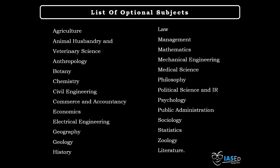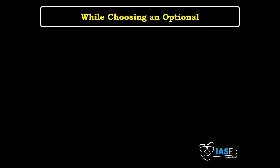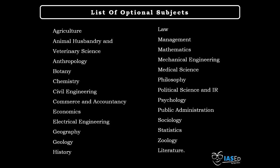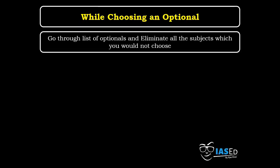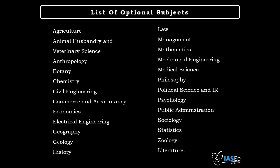What you should do is keep the list of all optional subjects in front of your eyes. This is the list from which you have to choose one optional subject whose syllabus is divided into two papers of 250 marks each. While choosing an optional, use the elimination method and eliminate all the subjects you would not choose. For example, if you are a student from an arts background — having completed your BA or MA — in most cases you may not select subjects like mechanical engineering, medical science, or electrical engineering.